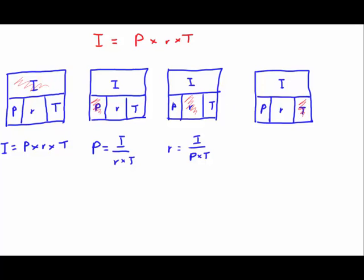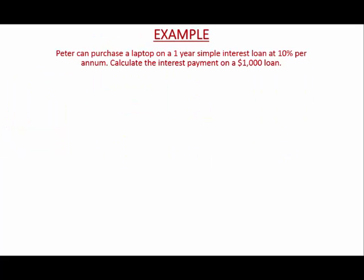Let's go through an example to make sure we understand this. This example: Peter can purchase a laptop on a one-year simple interest loan at 10% per annum. Calculate the interest payment on a $1,000 loan. It's essentially the same concept - when I was describing deposits earlier, now we're looking at a loan. Let's write out what we definitely have, the variables we have.